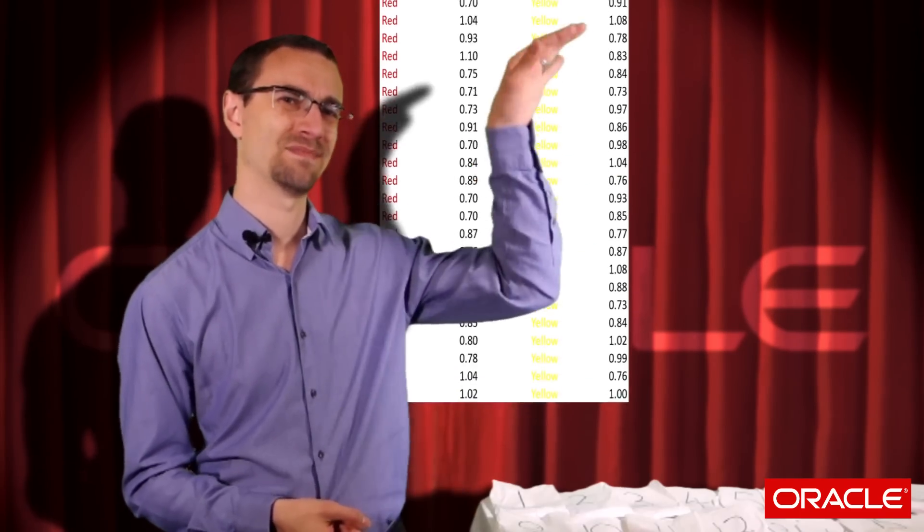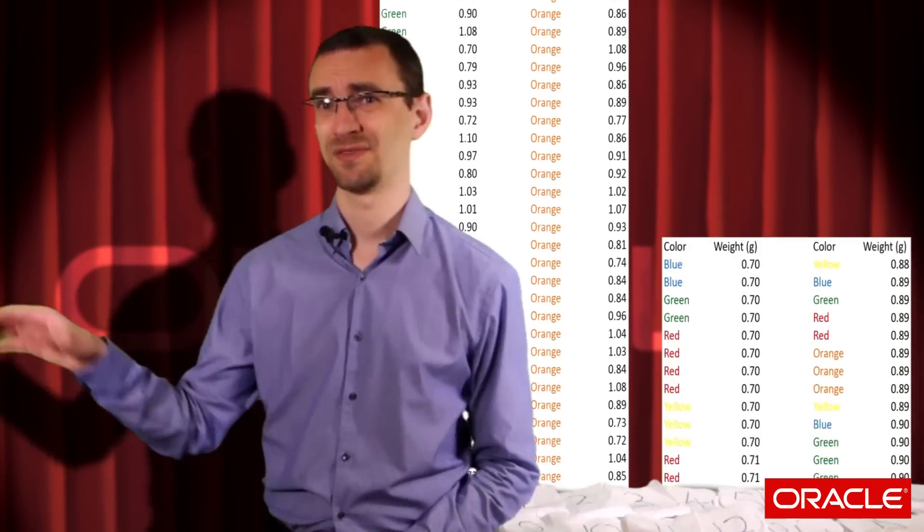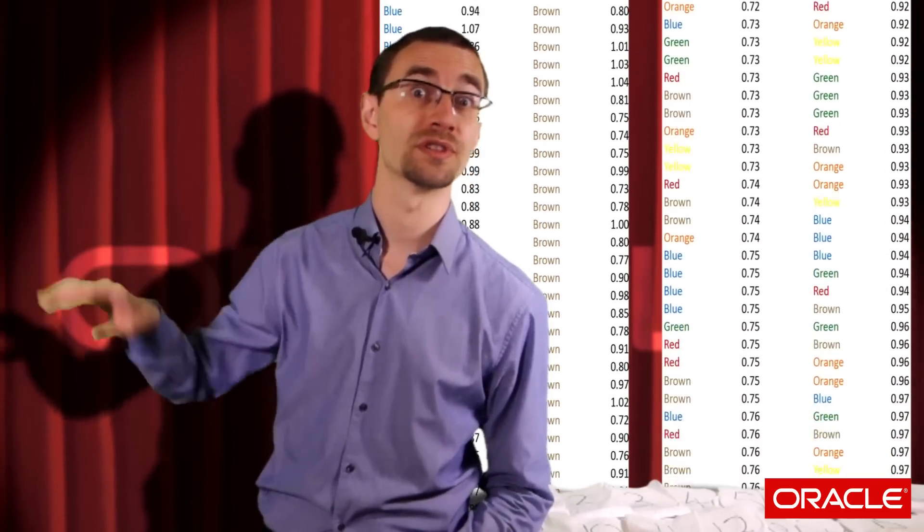For example, with my candies here, if I order them by colour, it's very likely that they're disordered by weight. Similarly, if I order them by weight, it's very likely that they're randomly ordered by colour. So optimising the clustering factor for one column or one set of columns almost always comes at the cost of other columns in the same table.